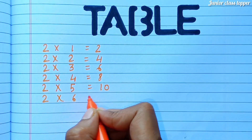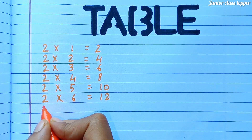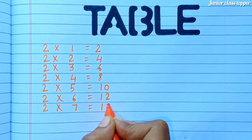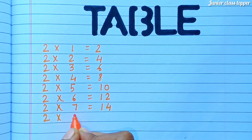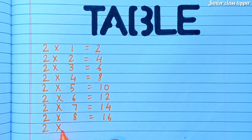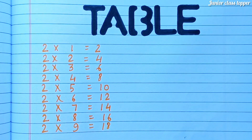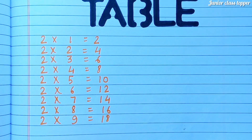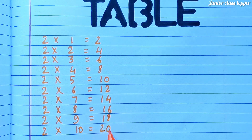2 6s are 12. 2 7s are 14. 2 8s are 16. 2 9s are 18. 2 10s are 20.